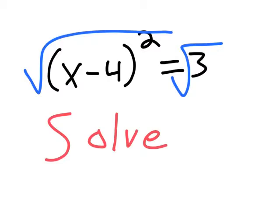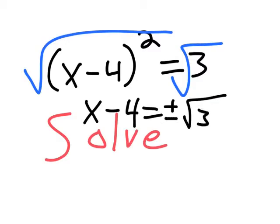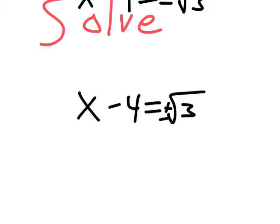But the most important thing to keep in mind is that when you take the square root to cancel out a squared, you've got to be thinking positive or negative square root of 3. Oops, forgot my positive or negative.